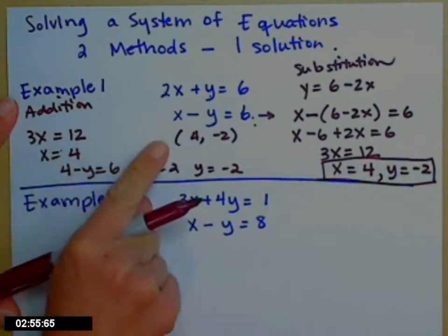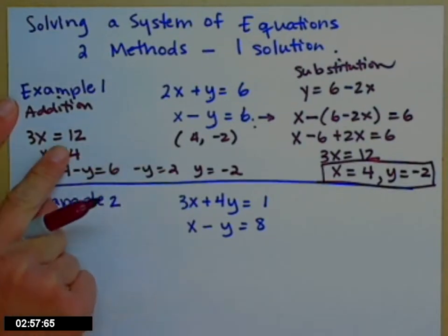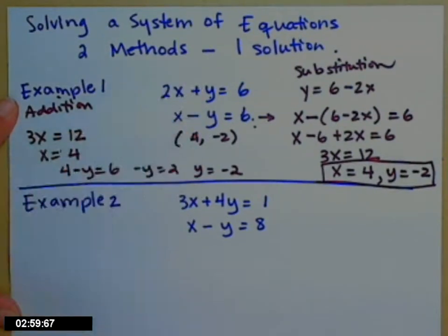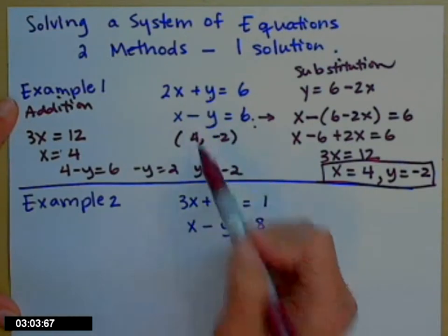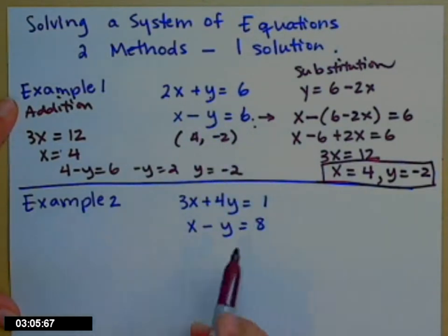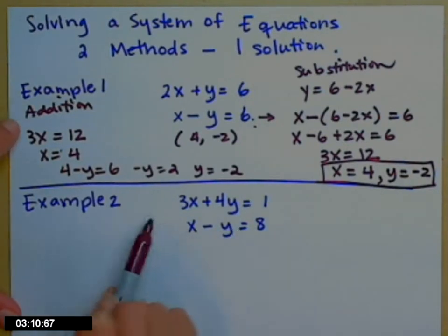So the addition method where we just added them, that only works if you can make one of the letters go away. So they have to be same coefficient but a different sign in front. When I look at my next example down here, I'm just going to use this addition method and show you. If you try to add at this point, none of the letters goes away. You're still stuck with all of them.